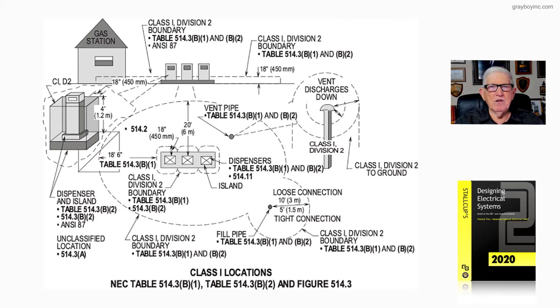Notice at the very top of the illustration, we're going to look at a Class 1 Division 2 boundary in accordance with our Table 514.3B1 and B2. Now the ANSI-87 you see there deals with inside the pump, and where there's no barrier is Class 1 Division 1 inside.